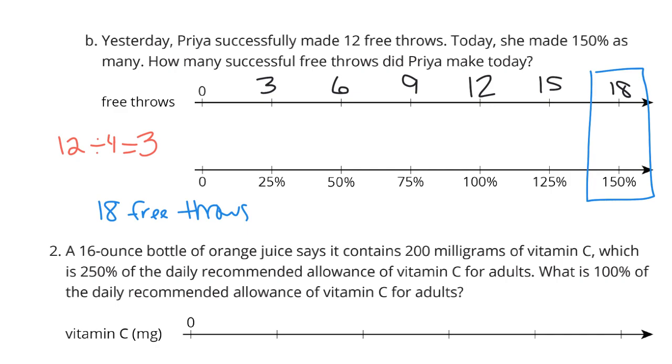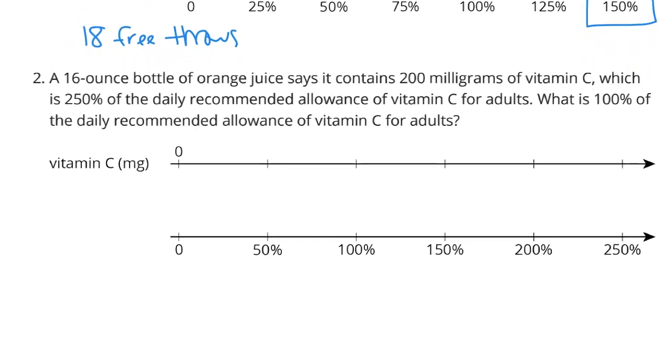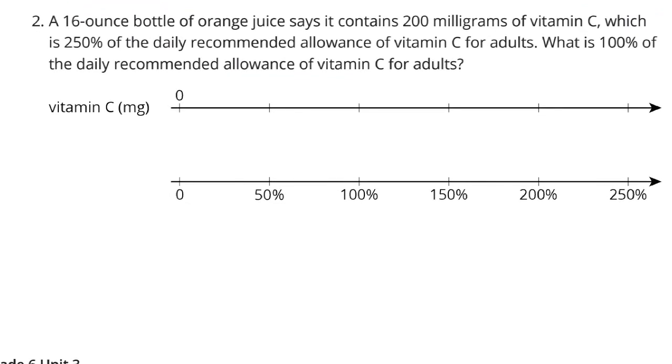Continuing on to question 2. A 16-ounce bottle of orange juice says it contains 200 milligrams of vitamin C, which is 250% of the daily recommended allowance of vitamin C for adults. What is 100% of the daily recommended allowance of vitamin C for adults? It says a 16-ounce bottle is 250% of the daily recommended. But I don't care that it's 16 ounces. What we care about is that it contains 200 milligrams.